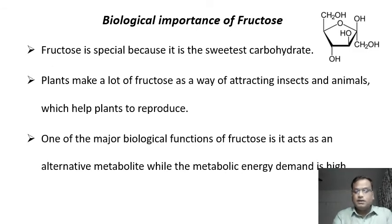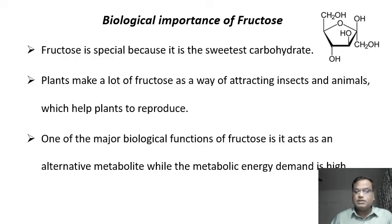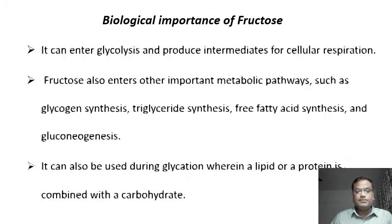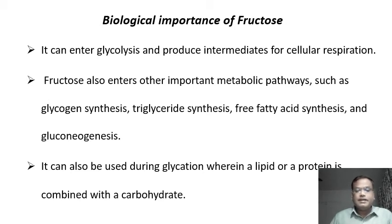Fructose has the same chemical formula as glucose but is structurally different. It is also a hexose sugar made up of six carbon atoms, and it is special because it is the sweetest carbohydrate. Plants produce fructose and use it to attract insects and other animals. Fructose also serves as an alternative to glucose during metabolic activities.